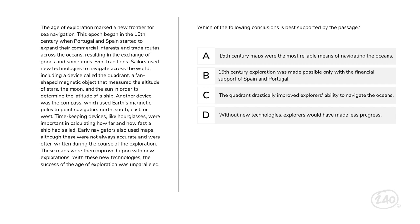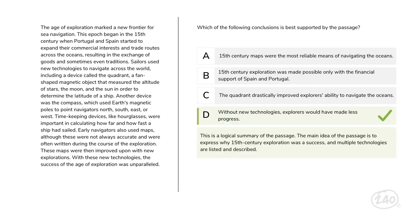Last up, let's draw a conclusion. Which of the following conclusions is best supported by the passage? Your conclusion should be a logical summary of the passage. The main idea is to express why 15th century exploration was a success. Multiple technologies are listed and described, which makes C the best choice. Choice A is a direct contradiction of what the passage says, and choices A and D focus too narrowly on one piece of technology. Choice B, while possibly historically accurate, cannot be verified with the information given in the passage. Conclusions should always be based on what is directly supported by the text.